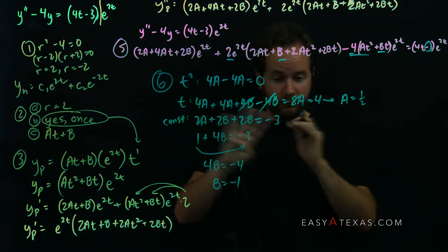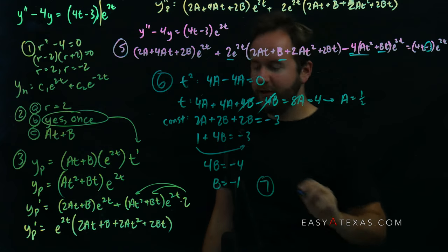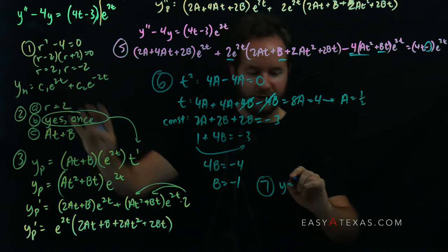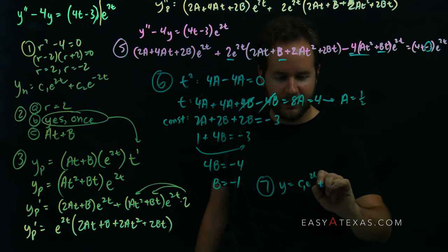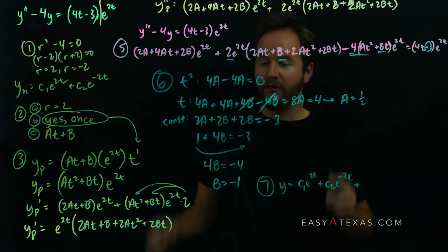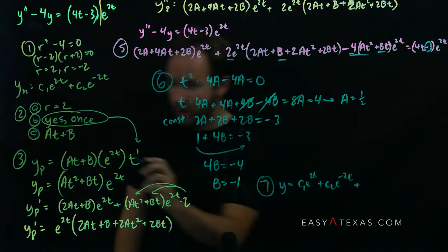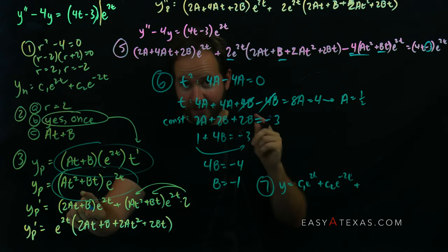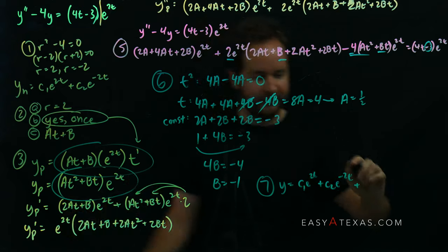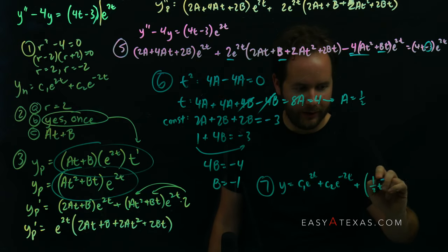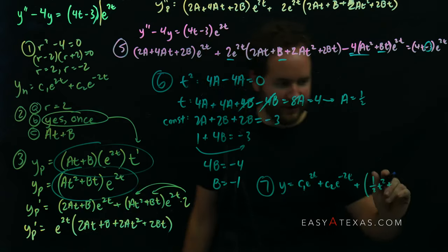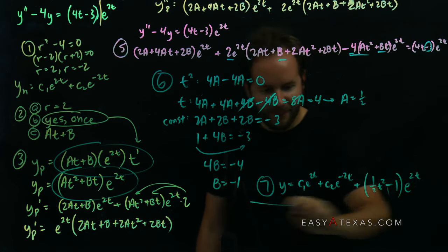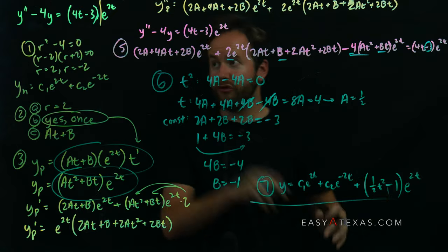Step 7, final answer: the general solution is y = yh + yp. The homogeneous was c1·e^(2t) + c2·e^(−2t). The particular solution was (at² + bt)·e^(2t) with a = 1/2 and b = −1, so yp = (1/2·t² − t)·e^(2t). The complete solution is y = c1·e^(2t) + c2·e^(−2t) + (1/2·t² − t)·e^(2t).